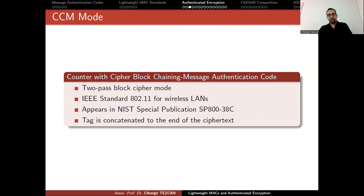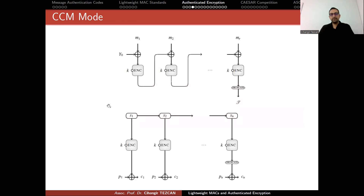Let's start with one of the most well-known examples: CCM mode, which stands for Counter with Cipher Block Chaining Message Authentication Code. It is a two-pass block cipher mode and an IEEE standard for wireless LANs, appearing in SP800-38C. The tag is concatenated to the end of the ciphertext. You use your encryption algorithm in CBC mode to produce a tag as in CBC-MAC, and you also use the same plaintext in counter mode for encryption — so you have two passes over the data.